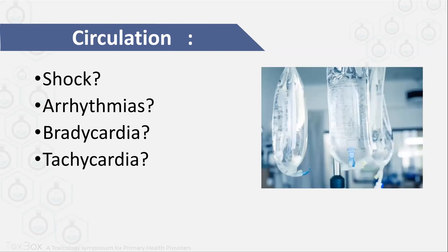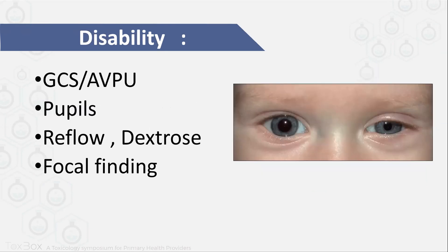In circulation, check blood pressure, heart rate, and extremities. If your patient is in shock, start IV fluids. If there is arrhythmia, check your monitor — is it bradycardia or tachycardia? It would be a very good idea to get an ECG at this time. In D, think about the Glasgow Coma Scale. Examine the pupils very carefully — they give a great hint about the toxidrome you are dealing with.